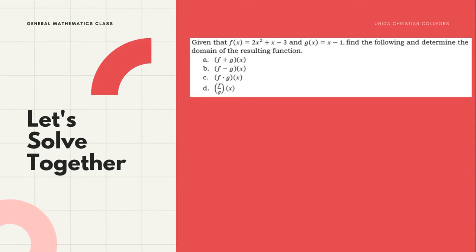Let's solve together. Given that f(x) = 2x² + x - 3 and g(x) = x - 1, find the following and determine the domain of the resulting function. For letter A, we have (f+g)(x).